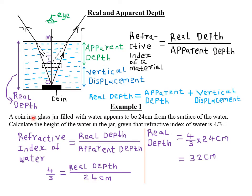We can look at an example which reads that a coin in a glass jar filled with water appears to be 24 centimeters from the surface of the water. Remember, the word 'appears to be' means that is not the true depth of that particular coin. Therefore, we call it the apparent depth. The distance from the surface of the water, where our eye is, to the position of our apparent image — that is the apparent depth. Therefore, the apparent depth in this particular case will be 24 centimeters.